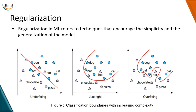To simplify this problem, let's assume each word is a two-dimensional vector and we visualize the plot. A machine learning model makes classification decisions by drawing lines. As shown in three pictures, I am drawing lines to classify animals and other objects. The decision flips between classes — animals or not animals — and this line is called the classification boundary.